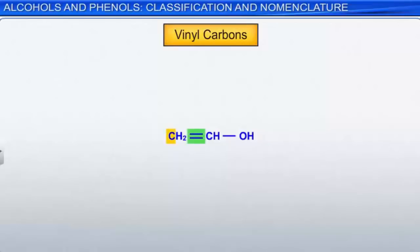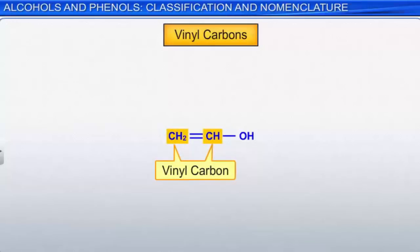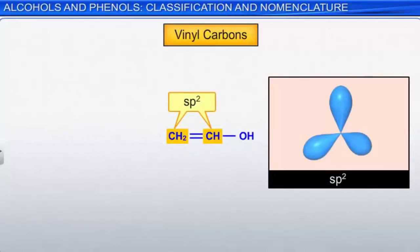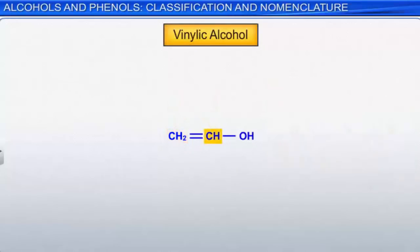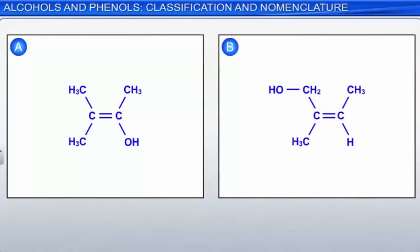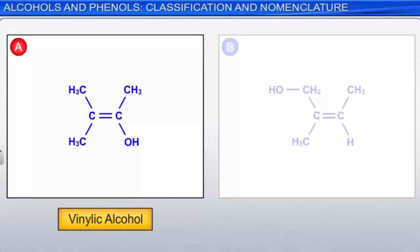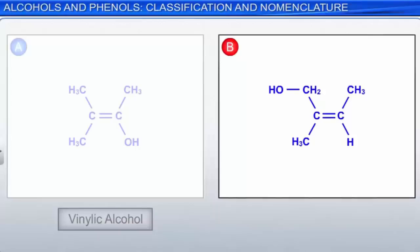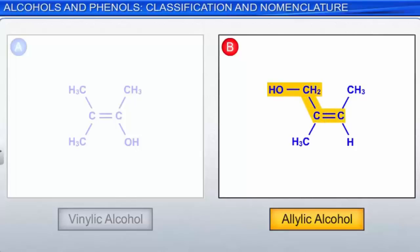A vinyl carbon is a carbon atom double bonded to at least one other carbon atom. Vinyl carbons, which are also called alkenyl carbons, are sp2 hybridized. A vinylic alcohol contains a hydroxyl group attached to a vinyl carbon. Note that the vinyl carbon is sp2 hybridized. Structure A shows a vinylic alcohol — the hydroxyl group is linked to a carbon participating in a carbon-carbon double bond. Structure B shows an allylic alcohol — the hydroxyl group is bonded to a carbon adjacent to a carbon-carbon double bond.